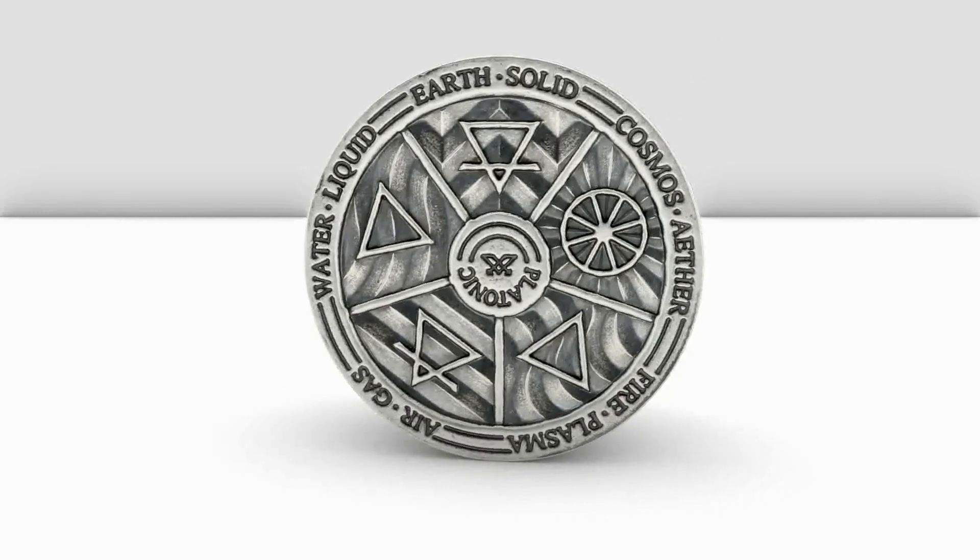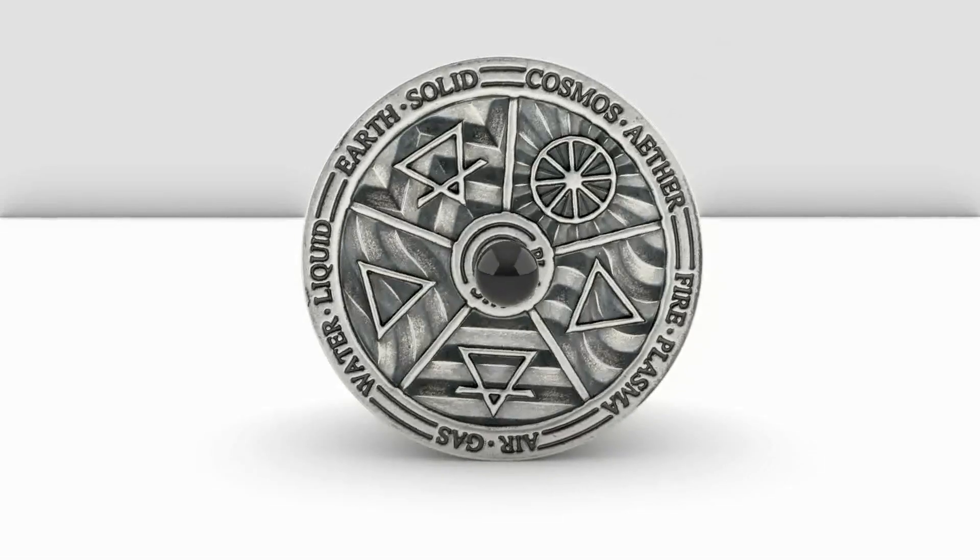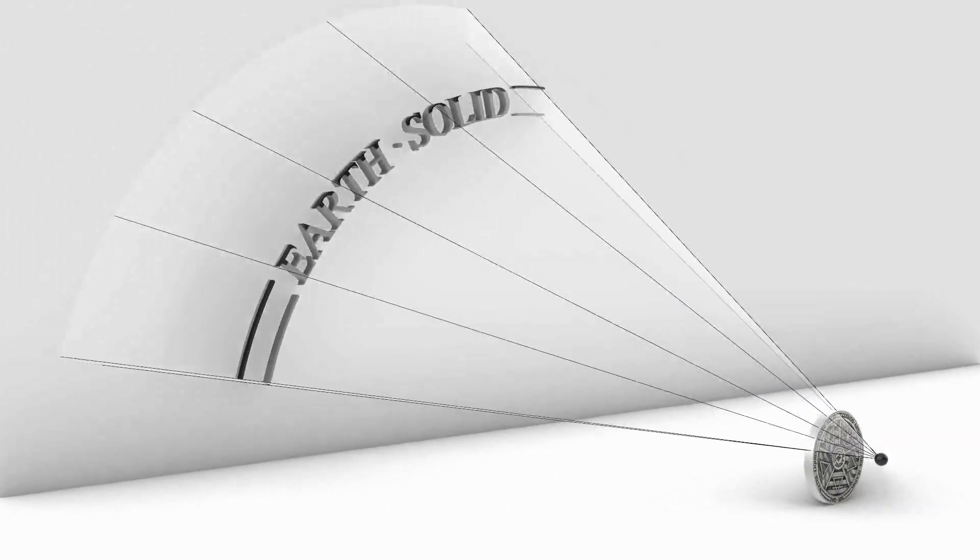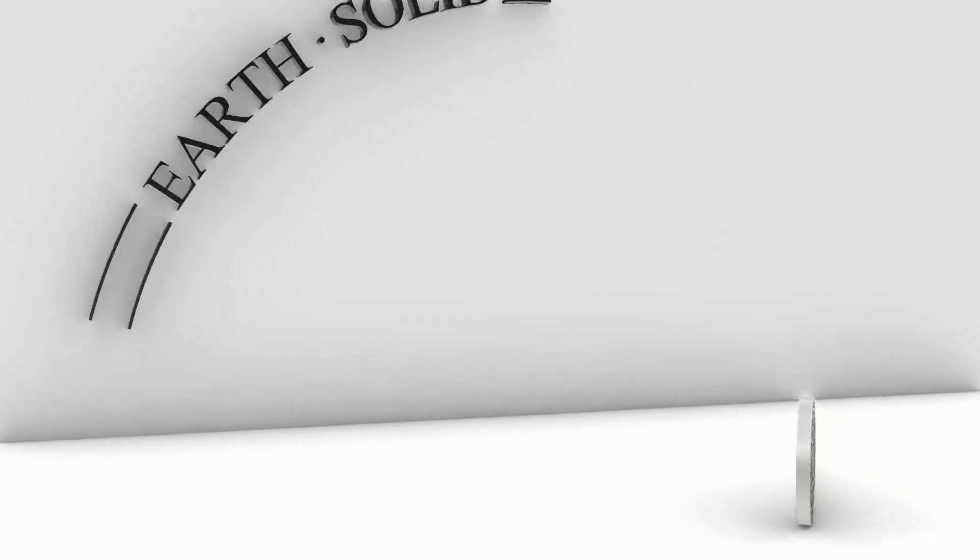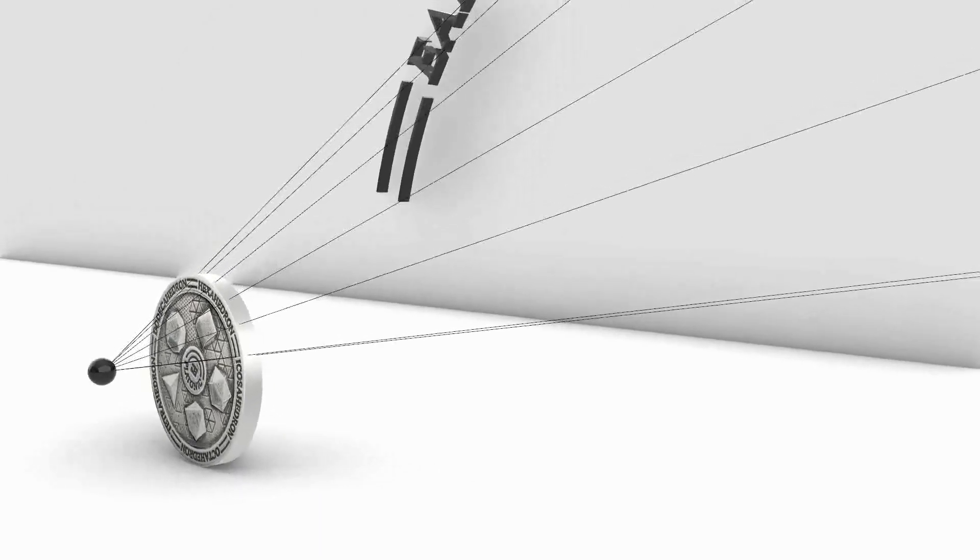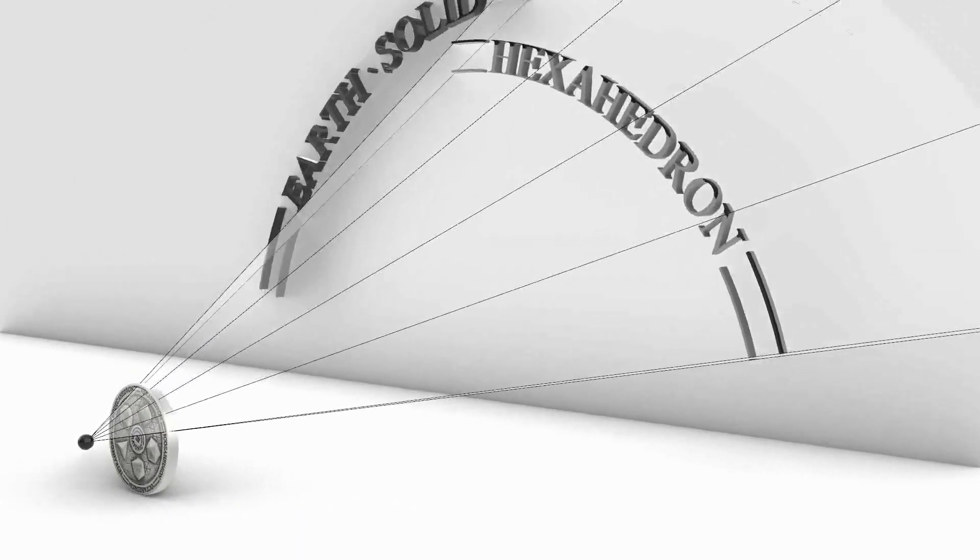The classical element of Earth represents a solid state of matter. Plato assigned the regular solid, known as hexahedron, to be a symbol of the element.